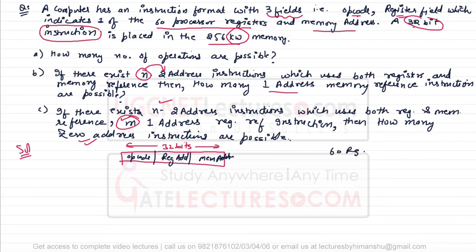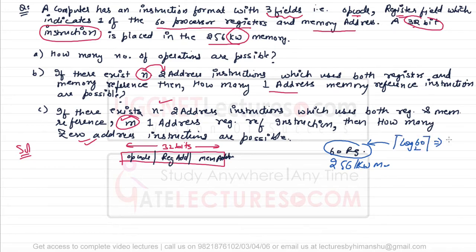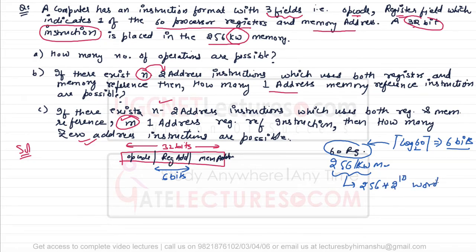There are 60 registers and 256 kiloword memory. To represent the address for 60 registers, we need log₂(60) ceiling value, which is approximately 6 bits. The memory size is 256 × 2^10 words, which equals 2^8 × 2^10 = 2^18 words. Hence, to represent one word's address, we require 18 bits for the memory address field.